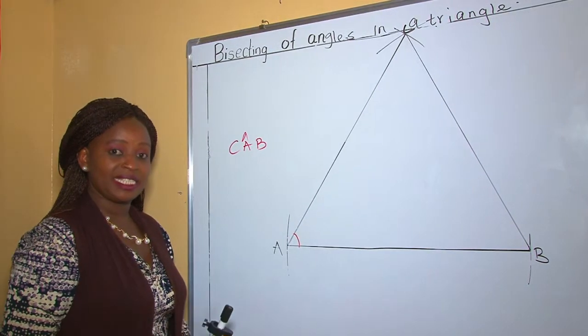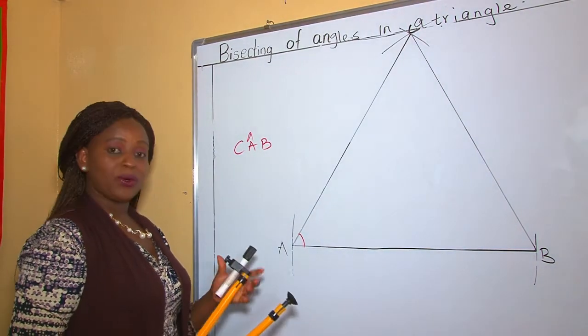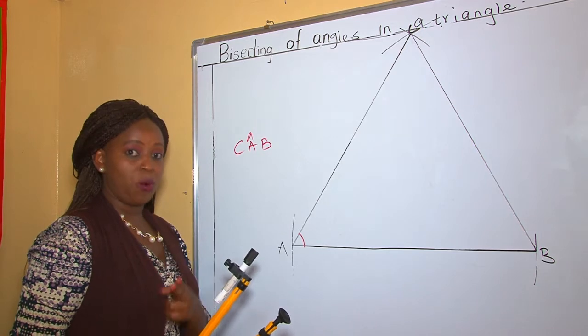Therefore, let's bisect that angle. To bisect an angle means to divide the angle into two equal parts.